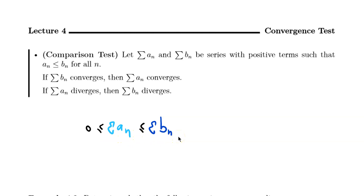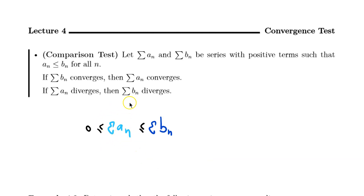So if b_n converges, the smaller a_n should also converge. On the other hand, if the small guy, a_n, diverges, then the big guy, b_n, should also diverge. This is the idea of the comparison test.